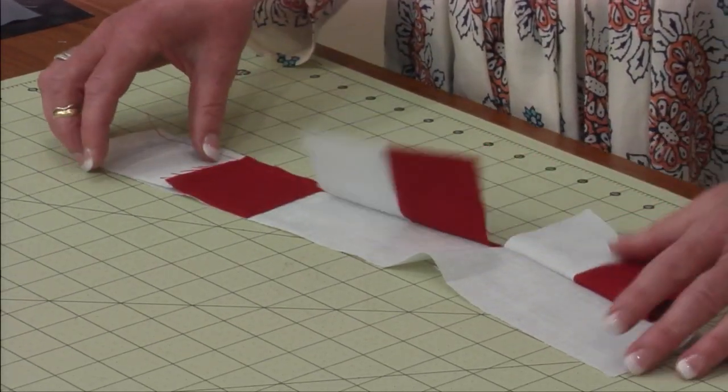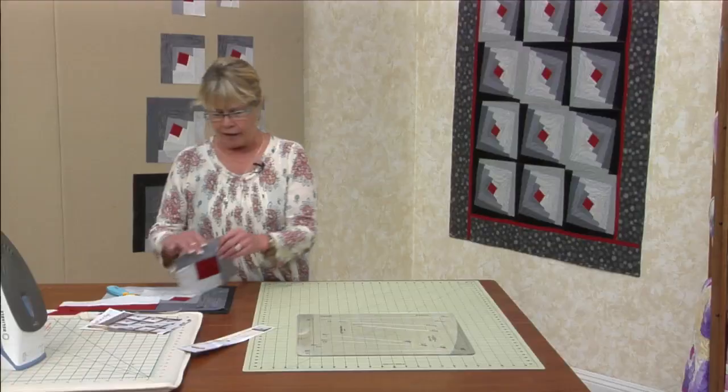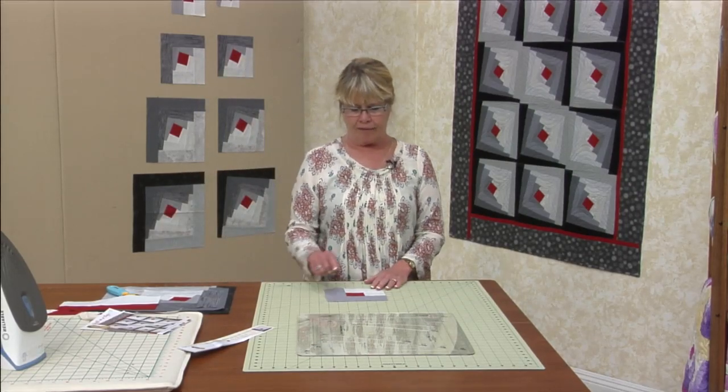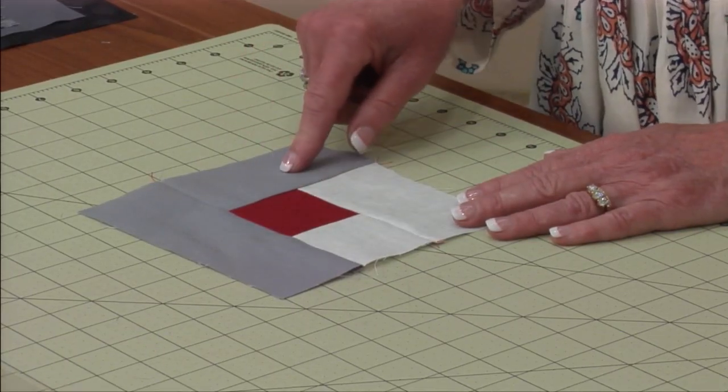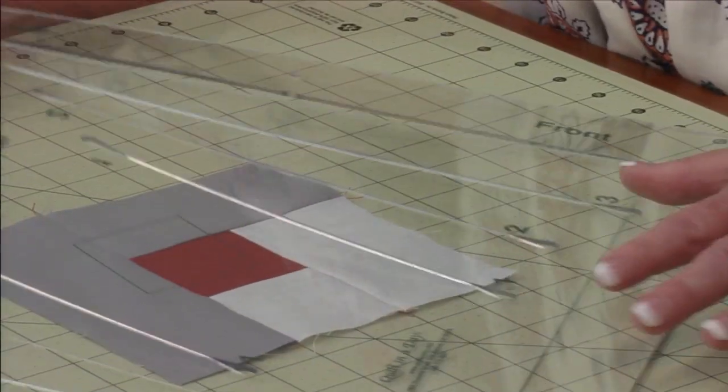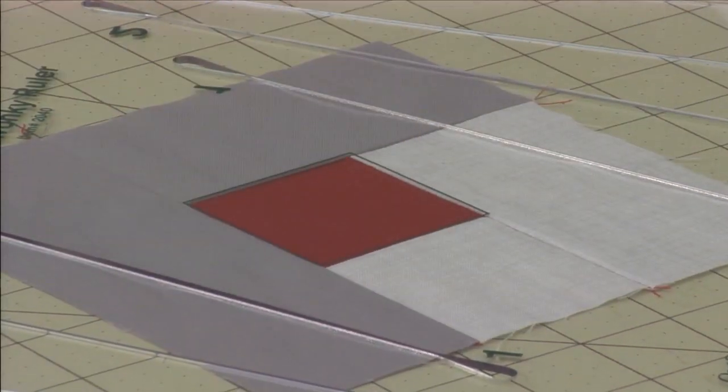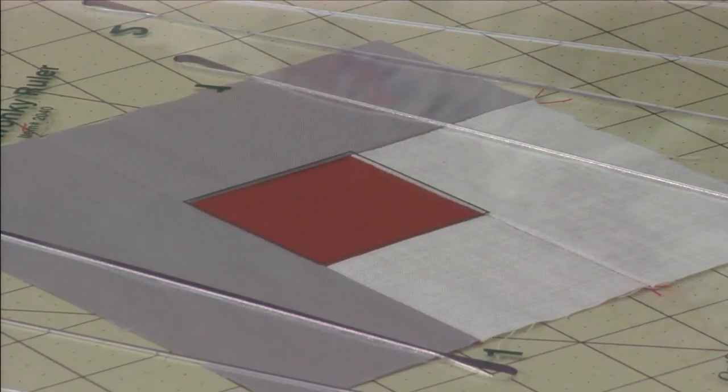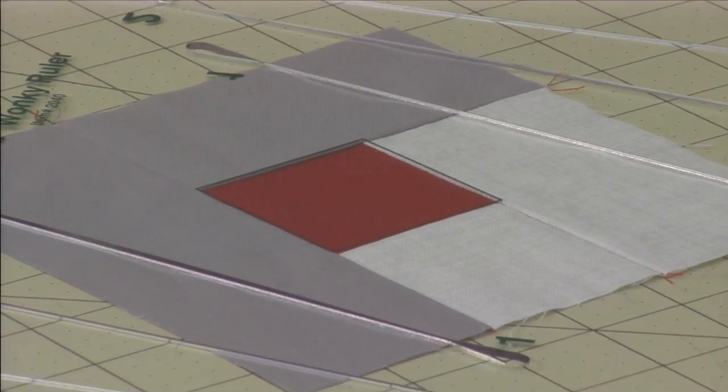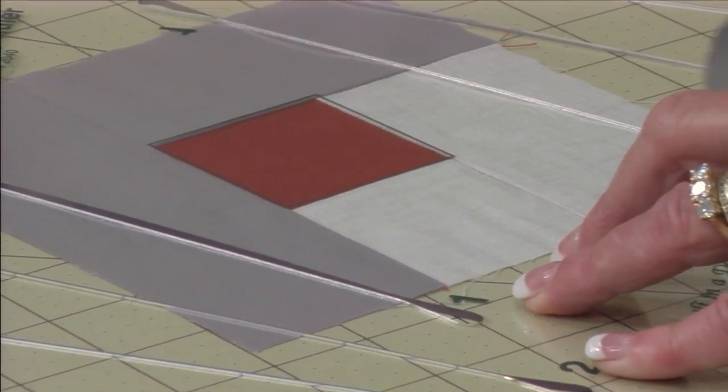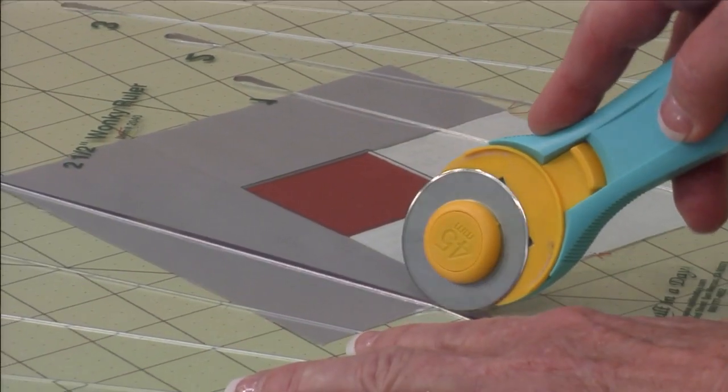It's made like any other log cabin. When we get our first round done you'll see we're going to have our center, first light and first dark and now we're going to introduce the ruler. So all I'm going to do is I'm just going to place that pre-printed center right on the red center and I'm going to slice it in number one and number one.